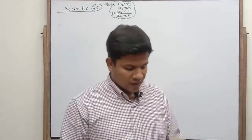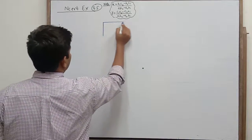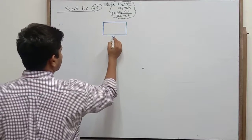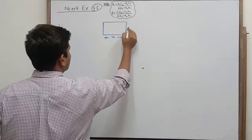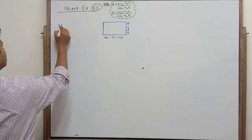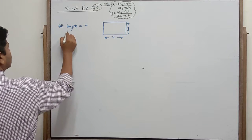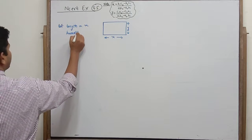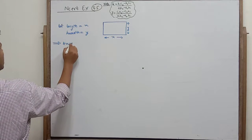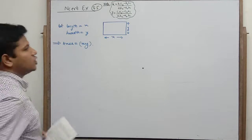We need to find the dimension of the rectangle. So we consider that this is a rectangle whose length is x and breadth is y. Let length equals x and breadth equals y. So the area is length into breadth, that is x into y.